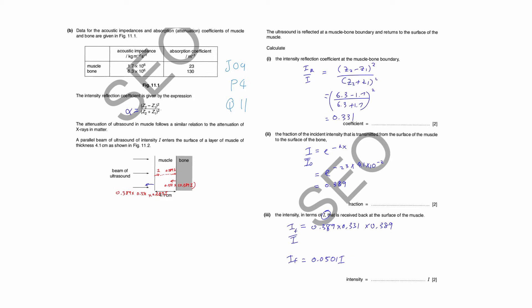For the last part — the intensity in terms of I that is received back at the surface of the muscle — you must be careful. What comes in is I; how much comes out finally? First it will be absorbed by muscle, so some will be lost. Then it will be reflected, so some will be lost as well. Then after it comes back out through muscle, again some will be lost. So there are three stages: absorbed, reflected, absorbed.